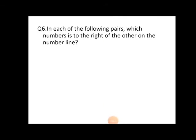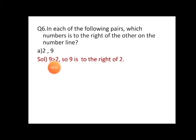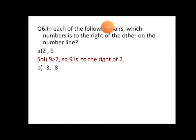Now, which of the following pairs — which number is to the right of the other on the number line? When we have two positive numbers to compare: nine is greater than two, so nine is to the right of two. The greater number will be to the right of the smaller number, so nine is to the right of two.